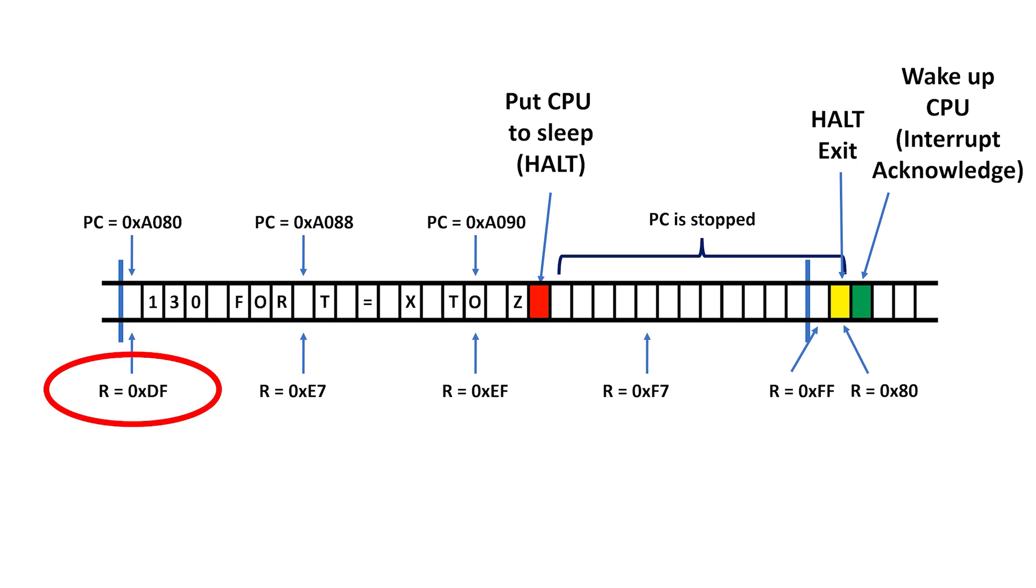By carefully controlling the initial value in the refresh register to be DF hexadecimal, bit 6 of the refresh address was going low right about the time we needed to generate an interrupt and exit HALT.